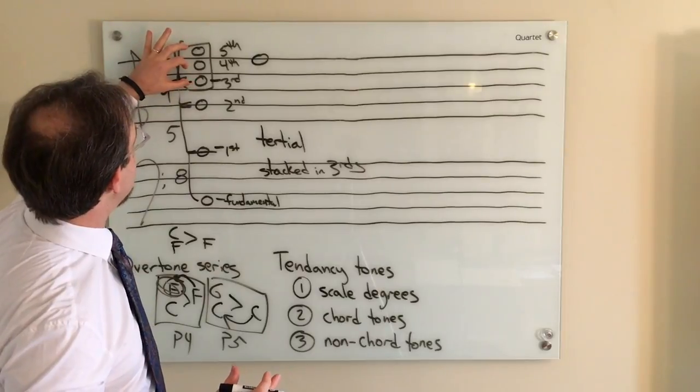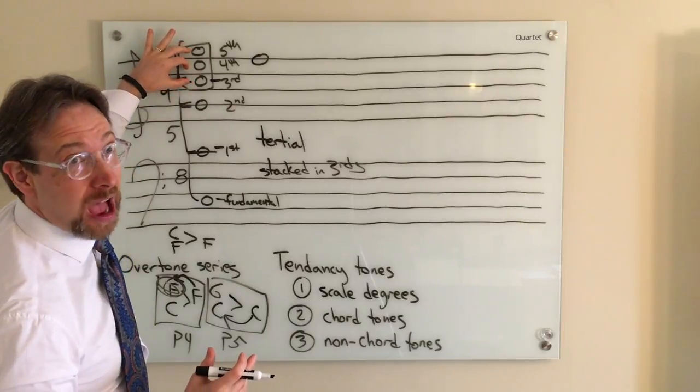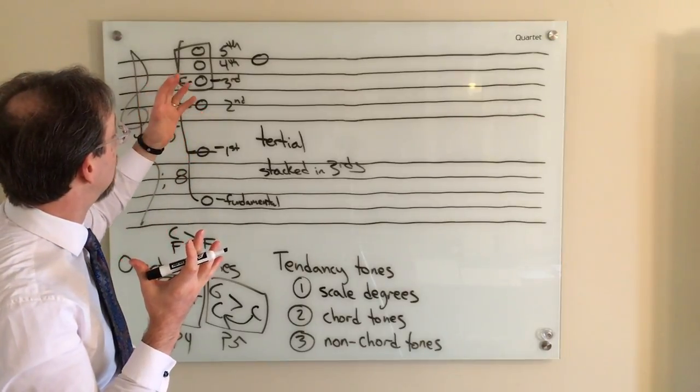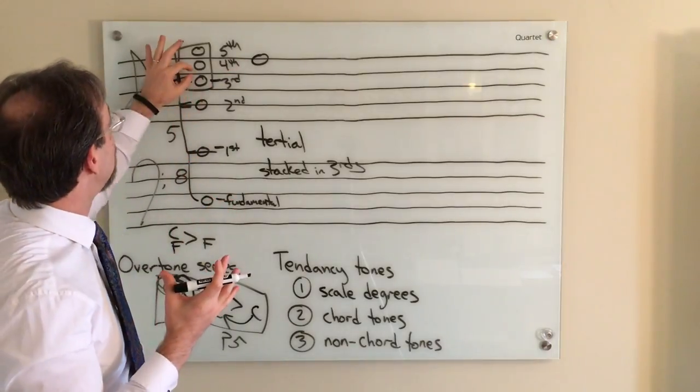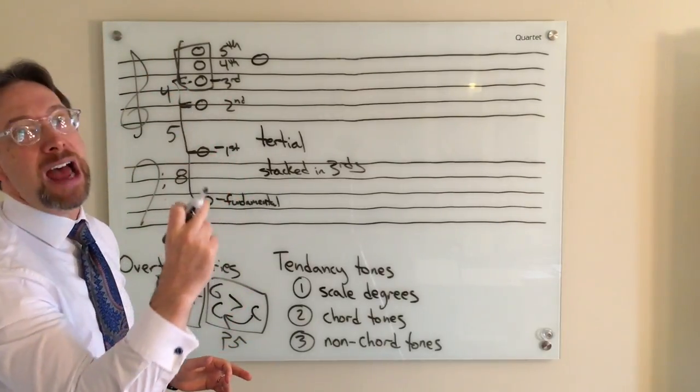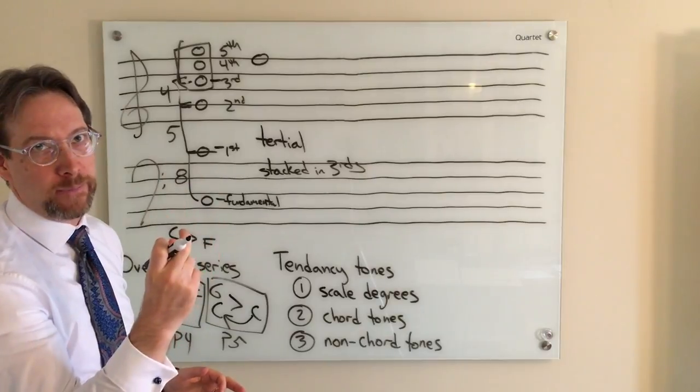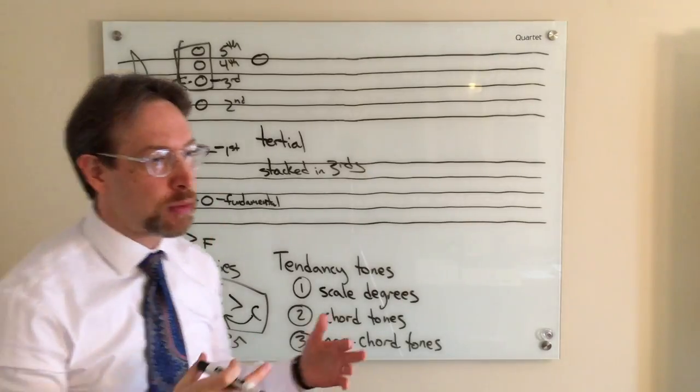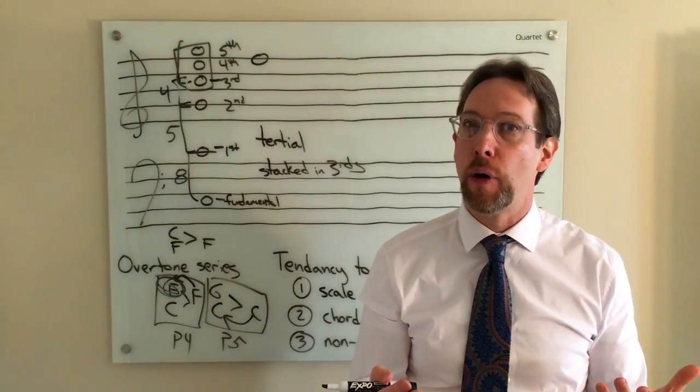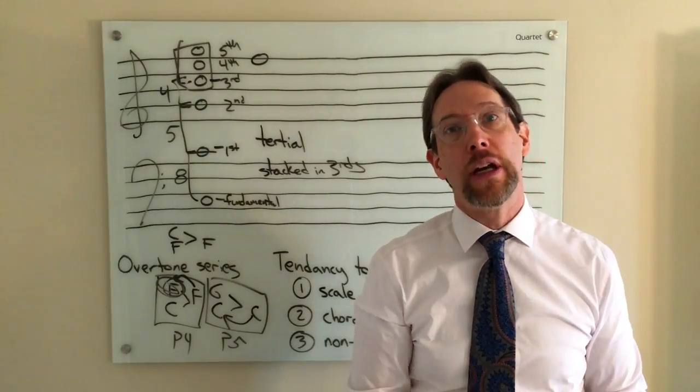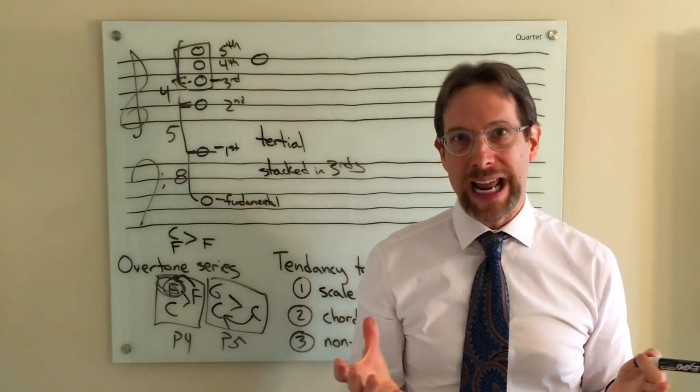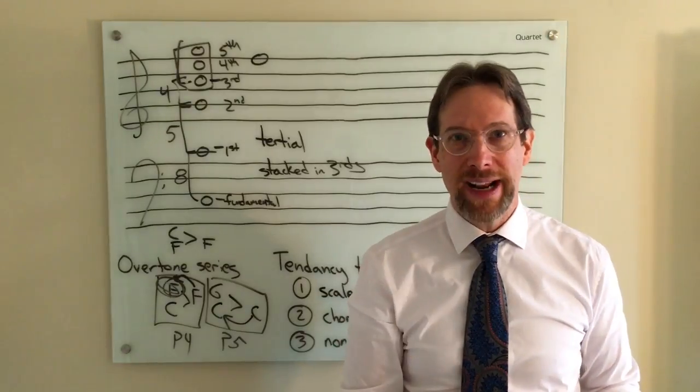But then when you start using triads more and more extensively in tertial harmony through the Renaissance, it grows and it really comes full-fledged during the Baroque era, that if you have this C, E, G, one, three, five as your foundational sound of consonants. And then you put an F against it, even if you leave out the E and it's just the C and the F, that F feels like it wants to move down to the E to create a third. And that's where that dissonance. So I hope that answers that question.